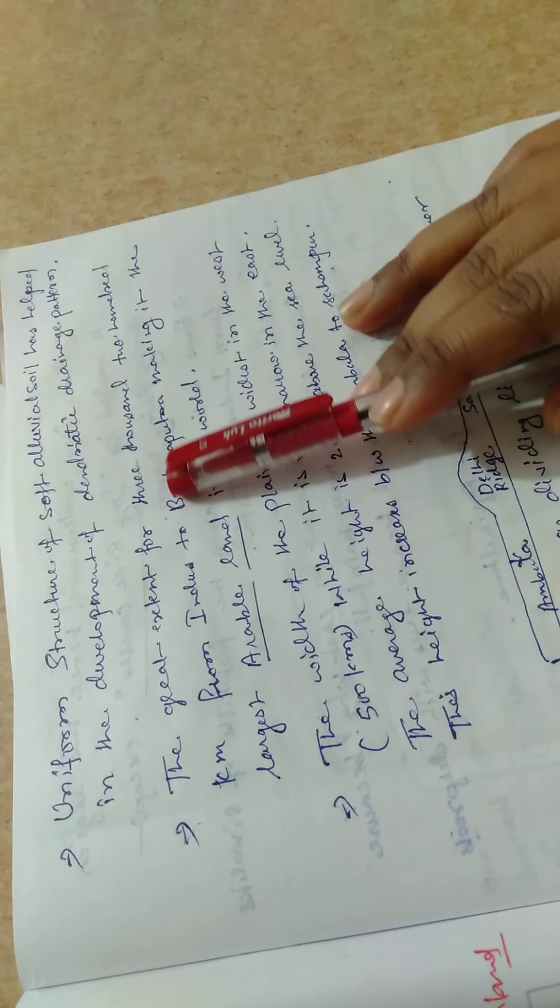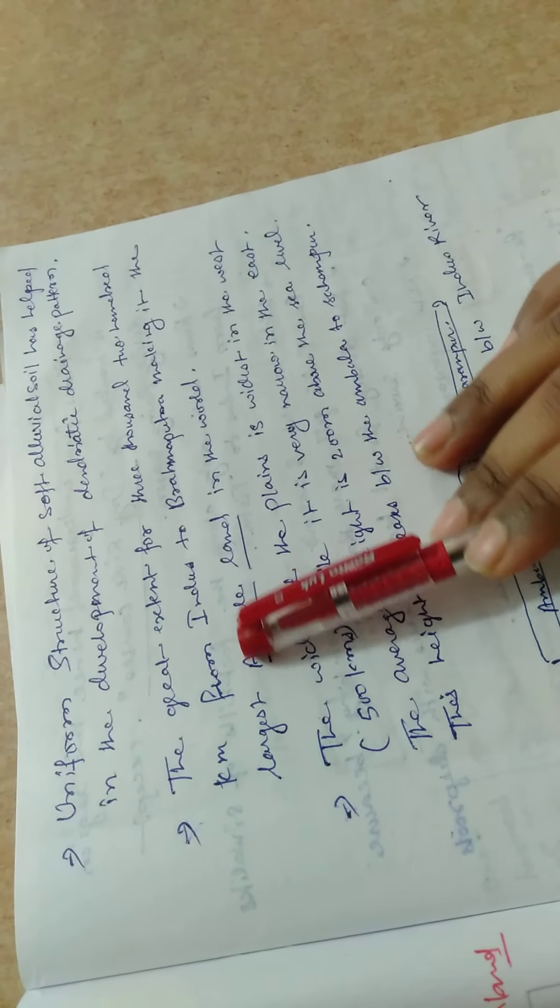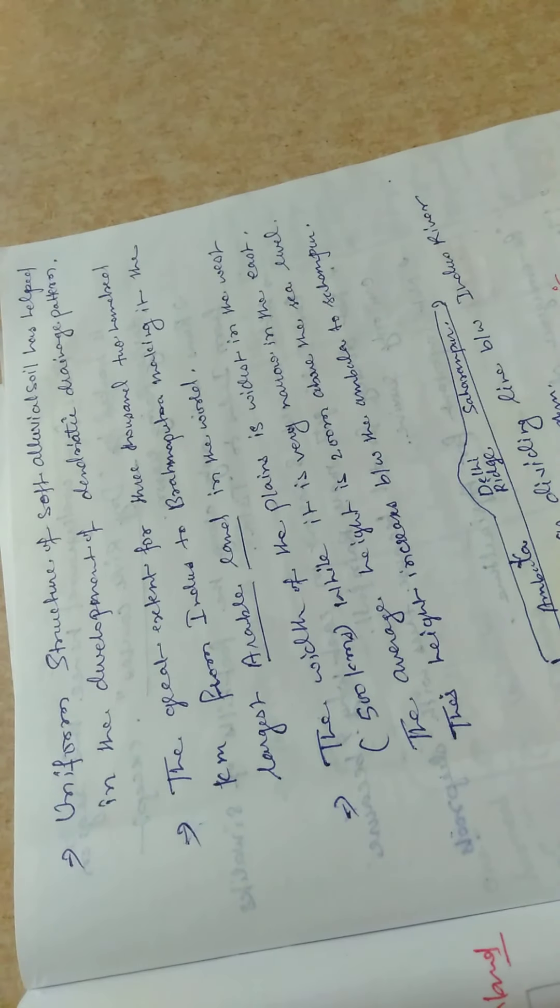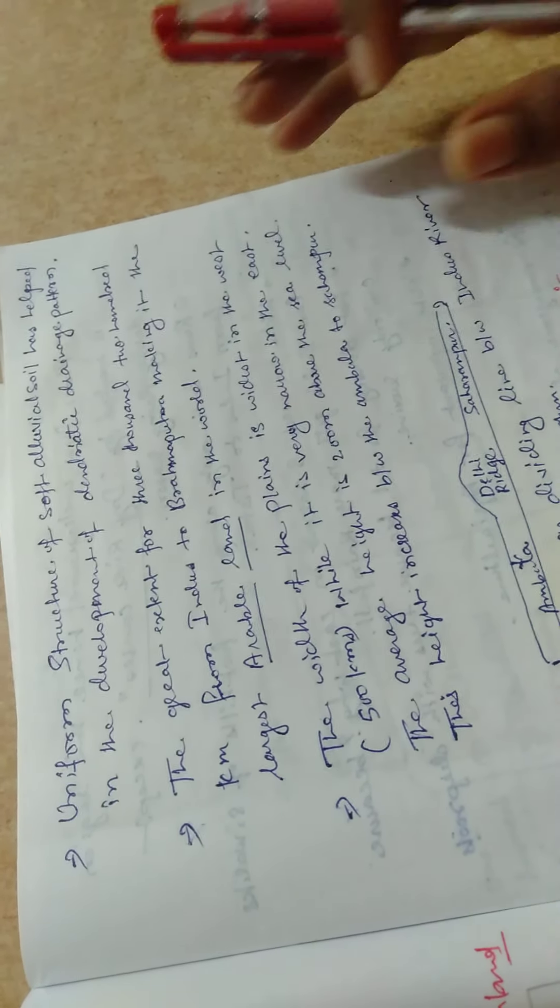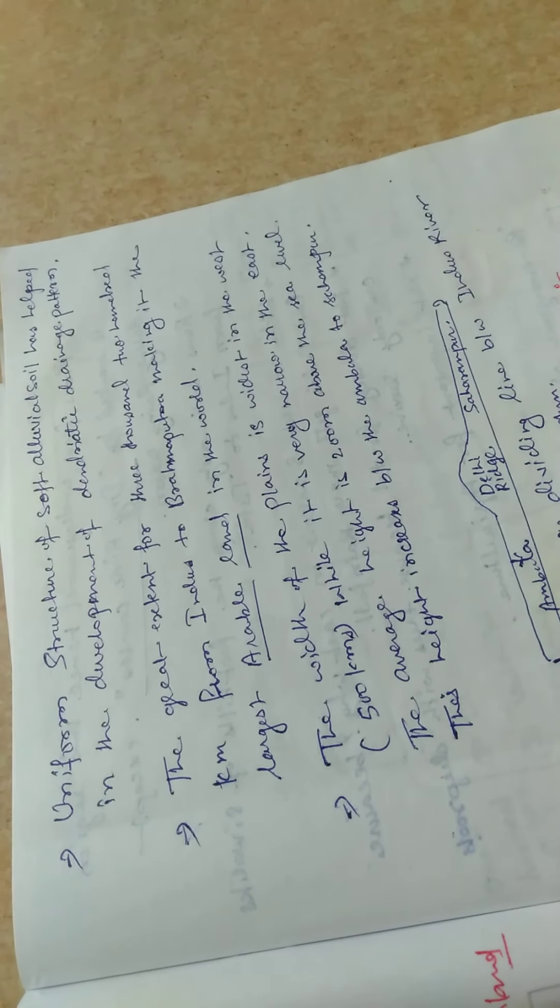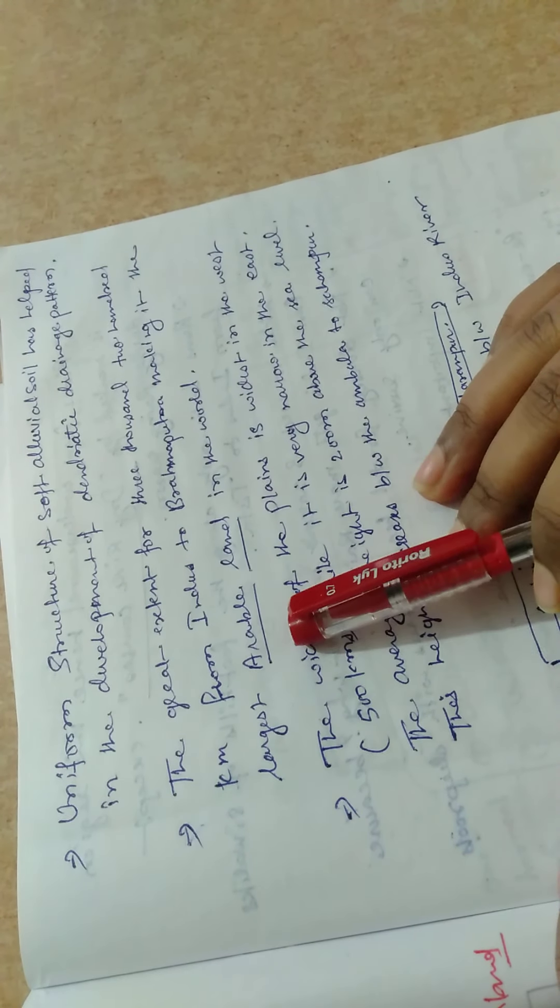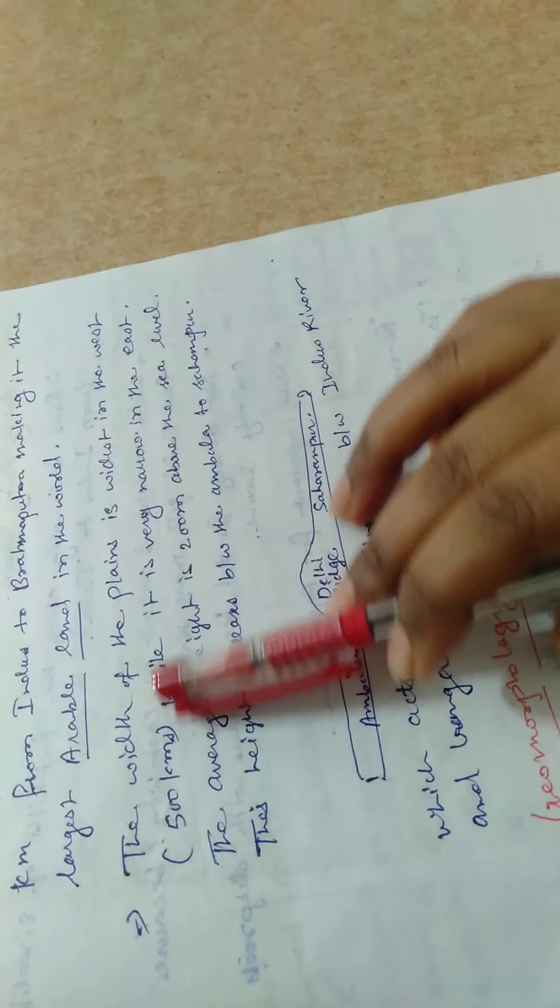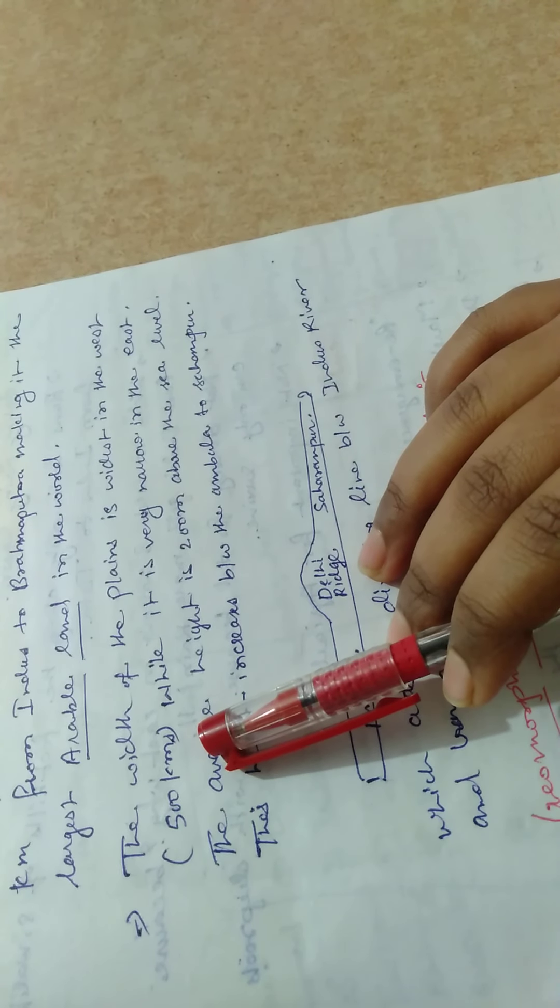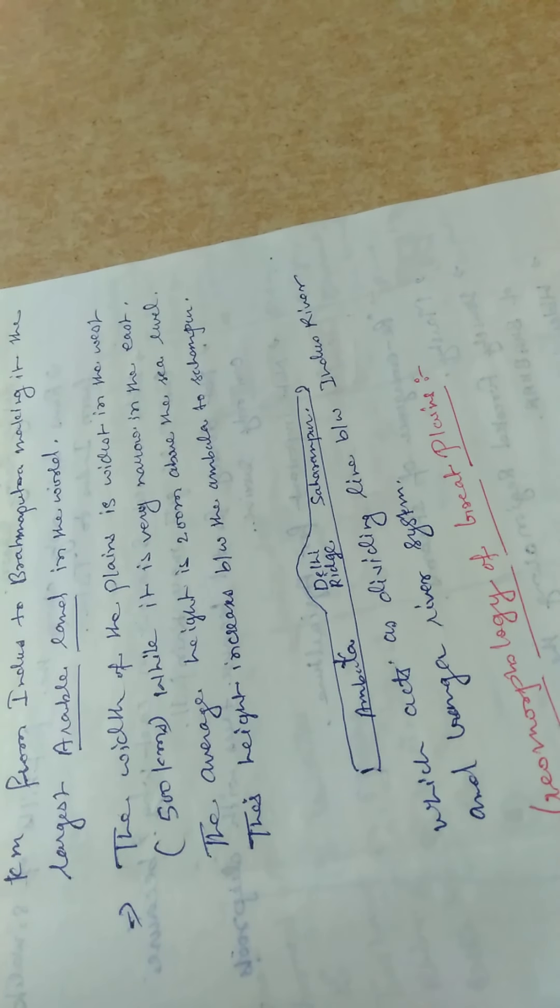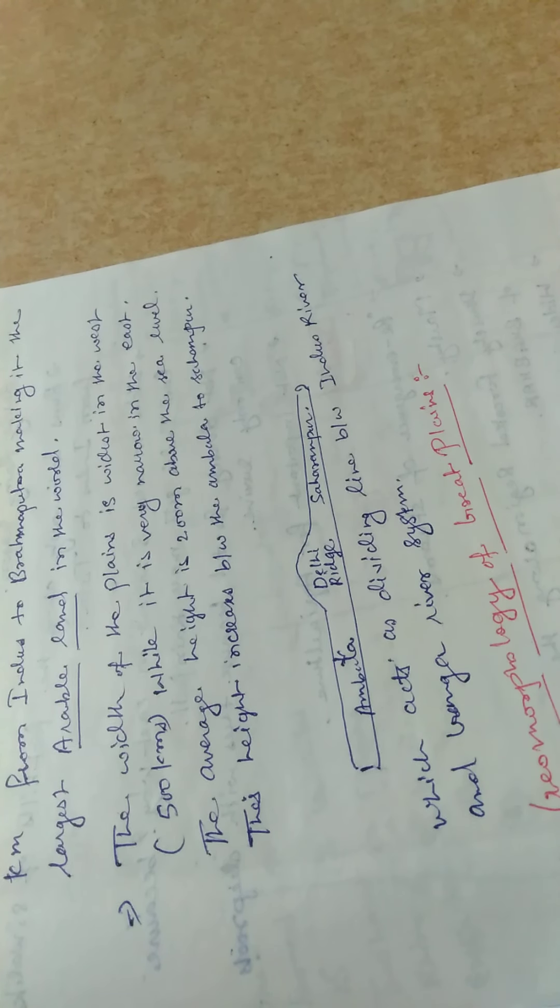The Great Plains extend for 3,200 km from Indus to Brahmaputra, making it the largest alluvial land in the world. The width of the plain is widest, about 500 km, and very narrow in the east. The average height is 200 meters above sea level.